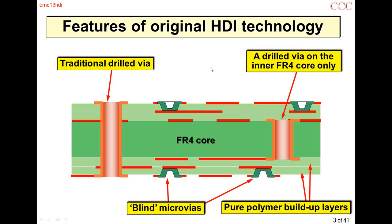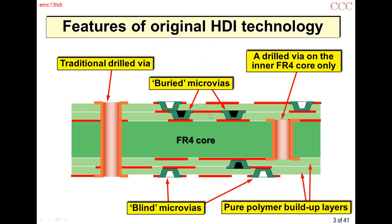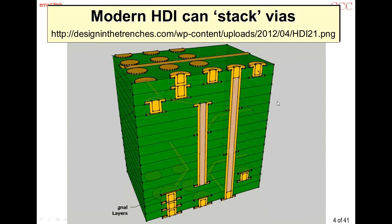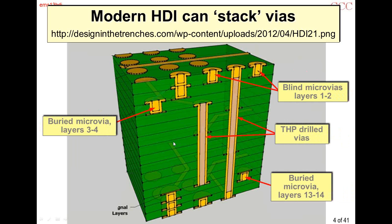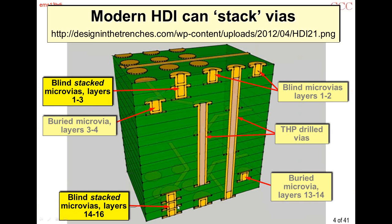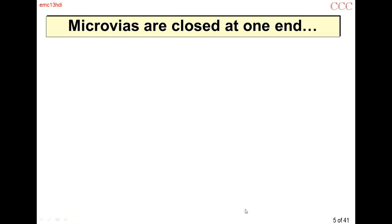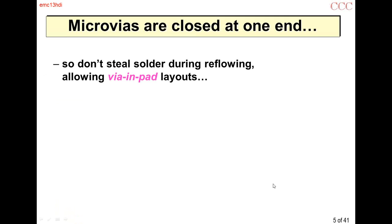Blind vias are on outer layers and go down to the next layer down. You can also have buried vias on internal layers. If you want to connect from layer one to layer three, you have to go down to layer two, then across with a trace or another via onto layer three. That was traditional HDI technology, but modern microviar technology has stacked vias placed on top of each other.